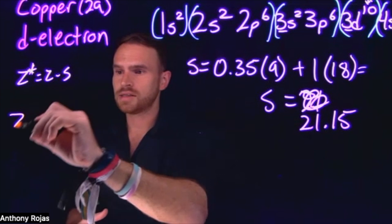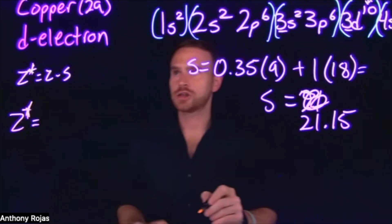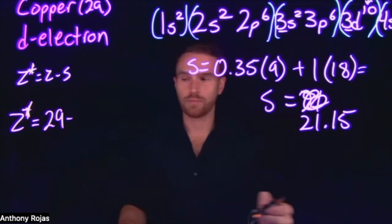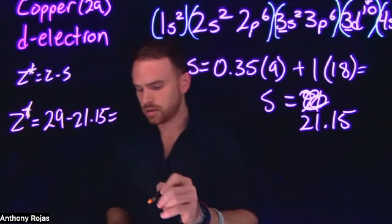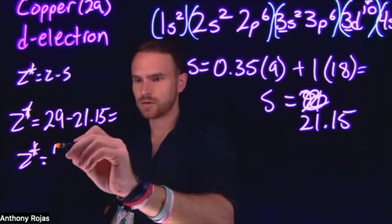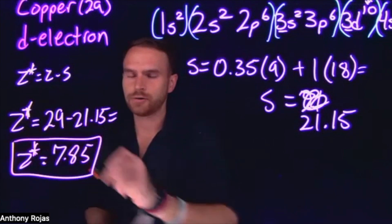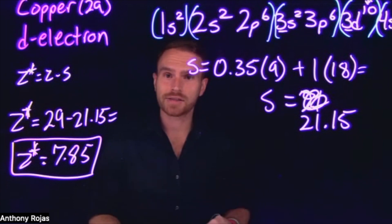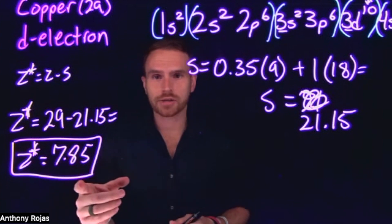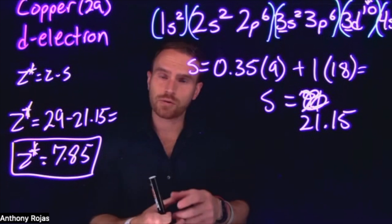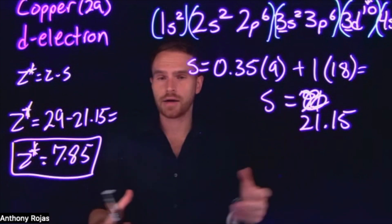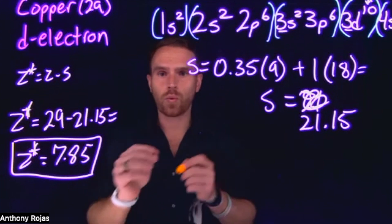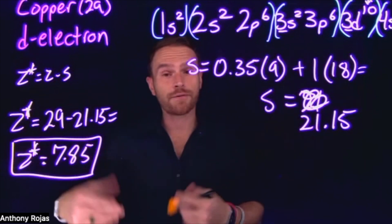Now we plug these values into the effective nuclear charge calculation. Copper is the 29th element on the periodic table, so Z equals 29. We calculated S as 21.15, and 29 minus 21.15 gives us an effective nuclear charge of 7.85. This is important because it also helps us decide which electrons get ionized upon ionization. If there is a strong attraction between electrons and the protons in the nucleus, it will be very difficult to ionize those electrons. We can use these calculations to determine which electrons in any given element are the first to go upon ionization.